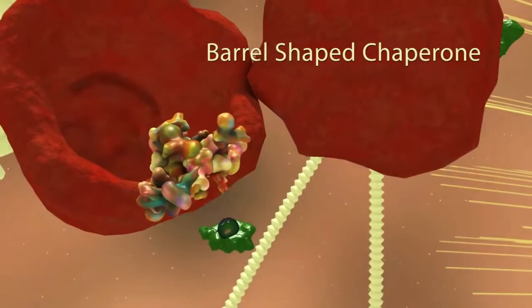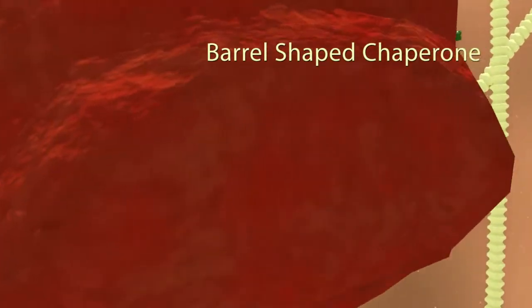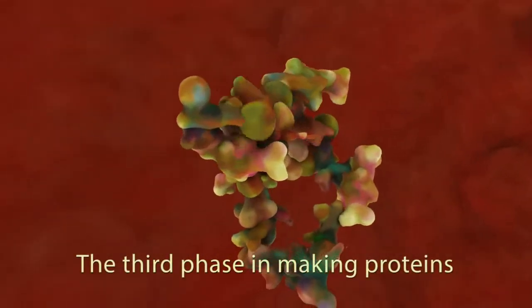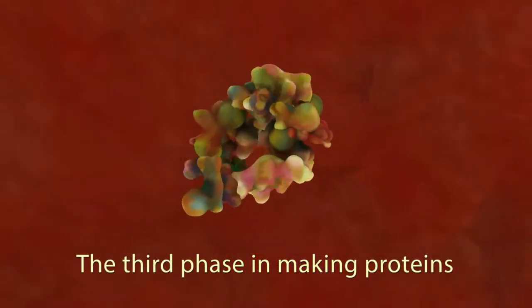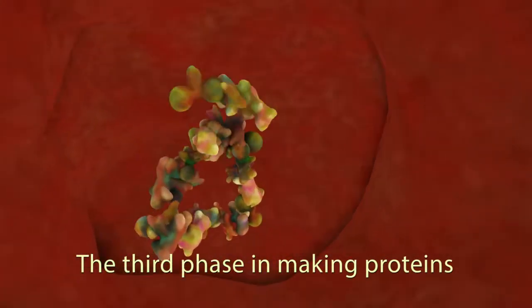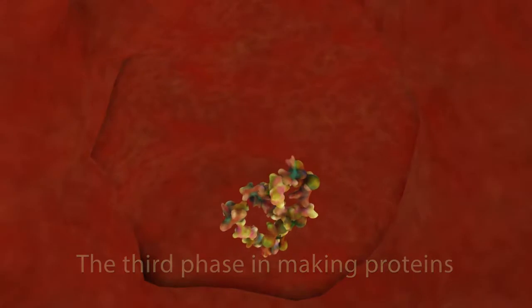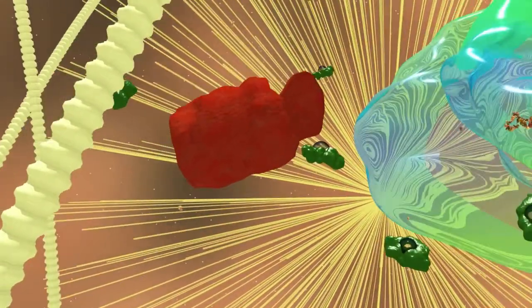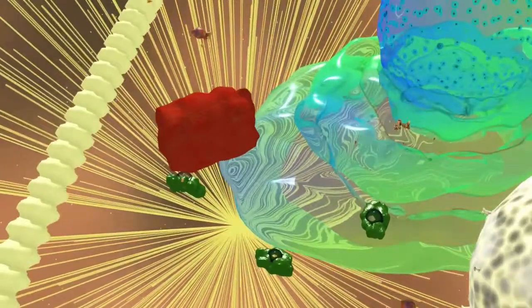These chaperones are commonly barrel shaped. The immaturely folded string of amino acids enters the chaperone and is folded into its proper shape. Then the chaperone releases the newly formed protein into the cell. So again, we see that the manufacture of proteins requires proteins.